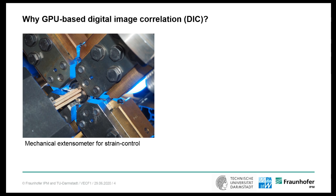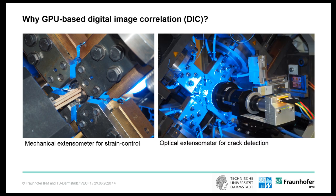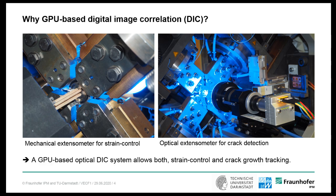Why is it worth to develop a new GPU-based digital image correlation system? Because many crack growth experiments use two sensors for strain measurement. The first one is a mechanical extensometer for strain control because this has measurement rates in the kHz range. The second one is an optical DIC system because that provides the spatial resolution for crack growth measurements. A GPU-based DIC system is able to do both strain control and crack growth tracking.